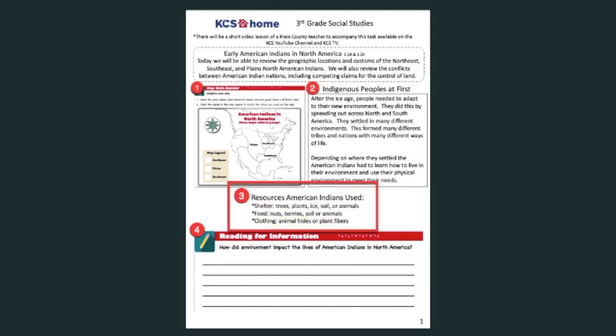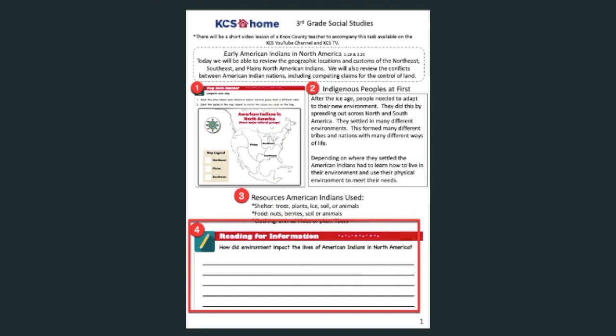Resources American Indians used: Shelter — trees, plants, ice, soil, or animals. Food — nuts, berries, soil, or animals. Clothing — animal hides or plant fibers. Next, you have a short writing activity. You will need to look back at the text and write about how the environment impacted the lives of American Indians in North America. This writing activity you will do on your own.